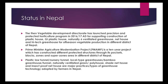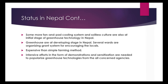Plastic low-tunnel/nursery tunnel, local-type greenhouses/bamboo greenhouse/tunnel, naturally-ventilated green/poly house, shade net house, and insect-proof net house are the major types of greenhouse technology adopted by farmers in Nepal. Some fan-and-pad cooling systems and soilless culture are also at an initial stage of greenhouse technology in Nepal.